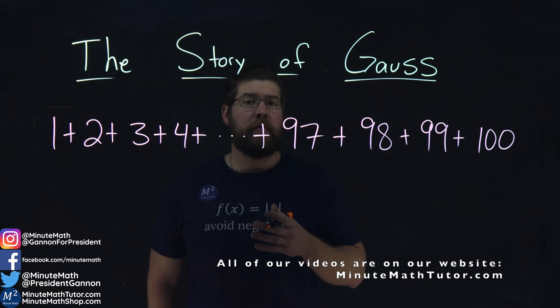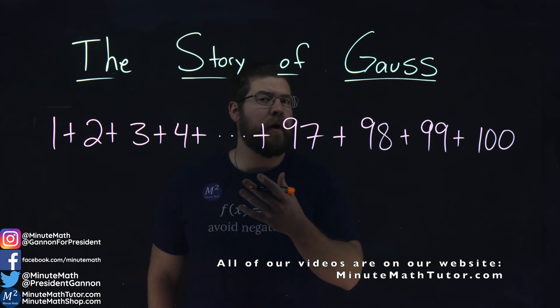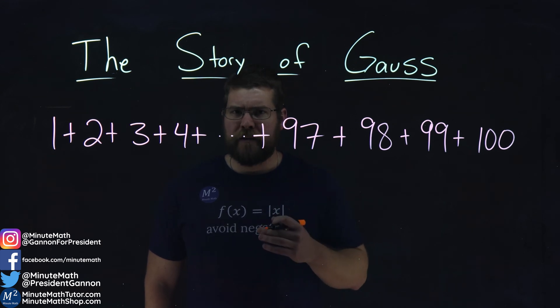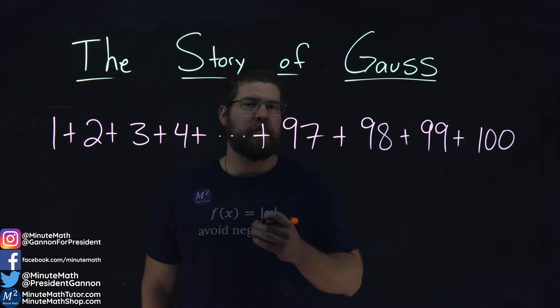Very quickly, Gauss came up with a solution and the teacher didn't trust him right off the bat. And then she checked his answer at the end and it was correct. And she wondered how did he solve this so quickly.